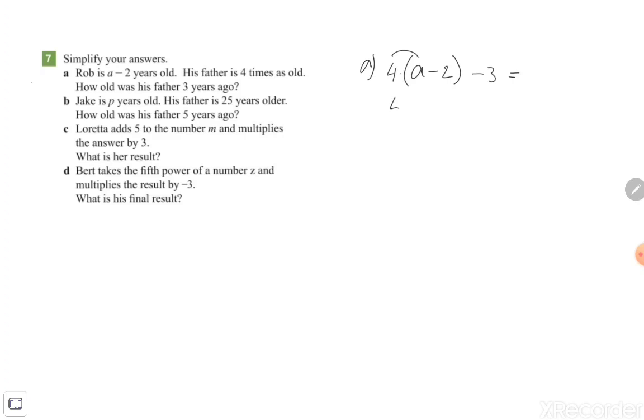So 4 times a is 4a, 4 times minus 2 is minus 8, and minus 3 is 4a minus 11. That's the answer from exercise a, and then of course years old.